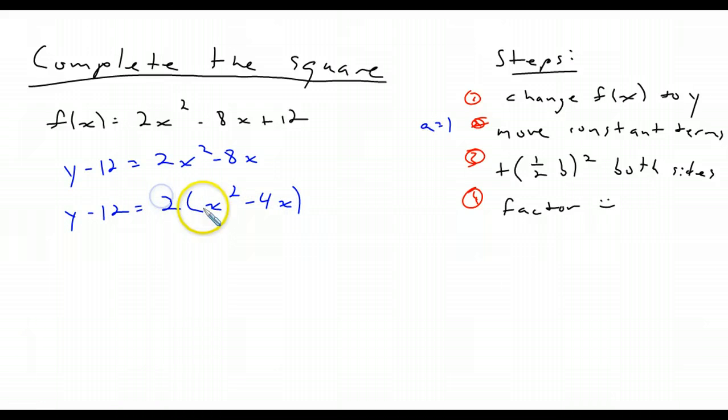So now I have my coefficient of 1, so it makes it a lot easier to complete the square. So in order to do that, I have y minus 12 plus some number, I don't really know what it is, equals 2 times x squared minus 4x plus some number. Don't really know what it is quite yet.